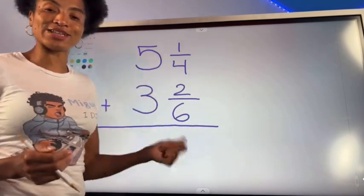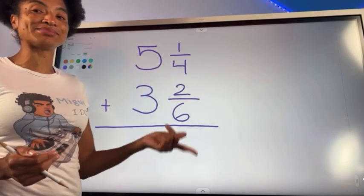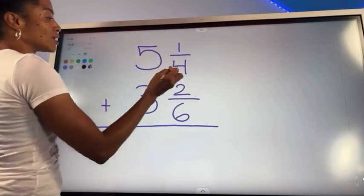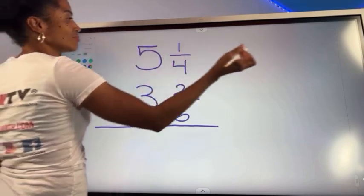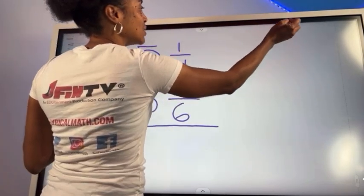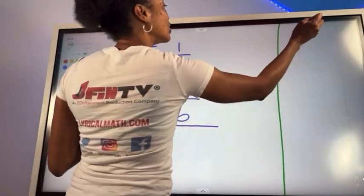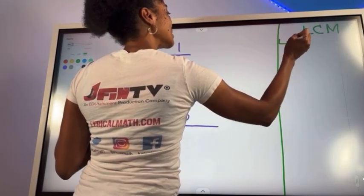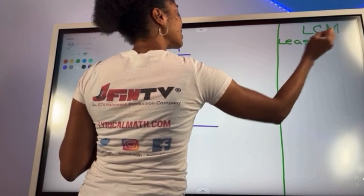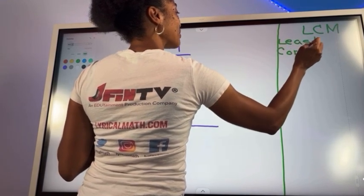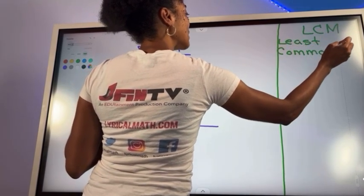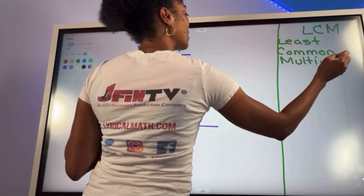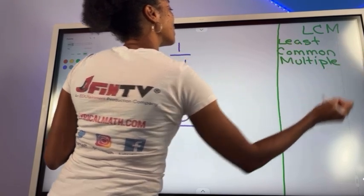So let's recite that: anytime my denominator is different, I'm looking for that LCM until I get it. So we want to find what's called the least common multiple. And so right here we're just going to set up a section for our LCM. This stands for least common... least common what? Multiple. Least common multiple.